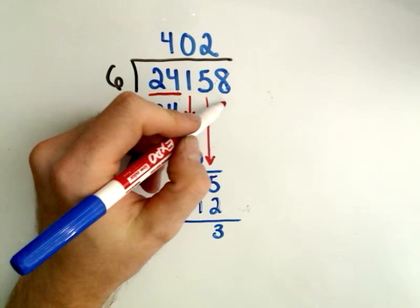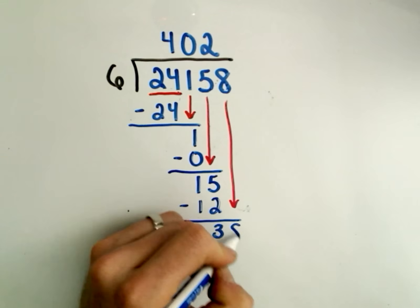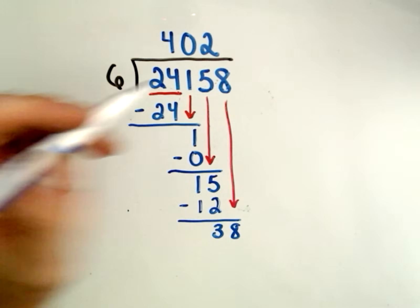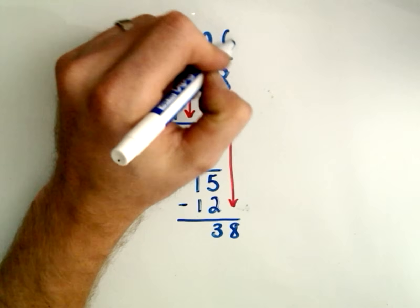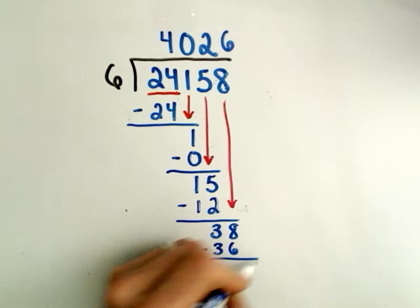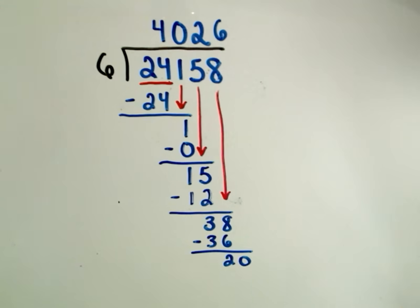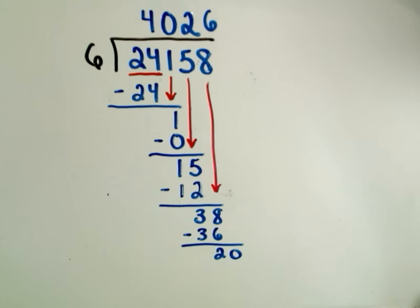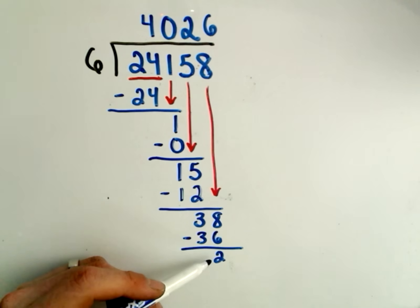And then we can drop down the next number, which is an 8. Okay, and now I think will 6 go into 38? Certainly, 6 times, because 6 times 6 is 36. Well, you could at this point stop and, excuse me, let me leave the zero off. You could stop with the 2 and say you have the number 4,026 with the remainder of 2.